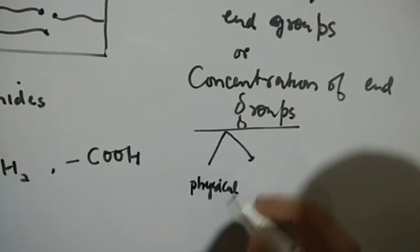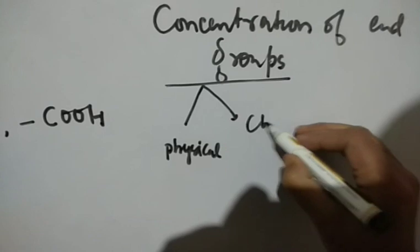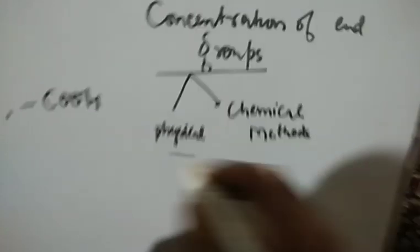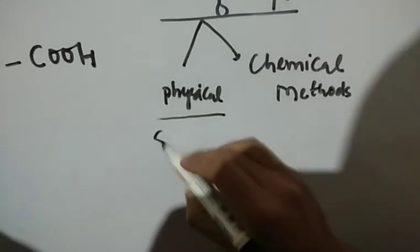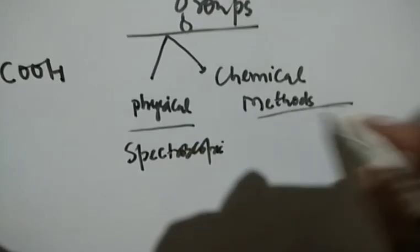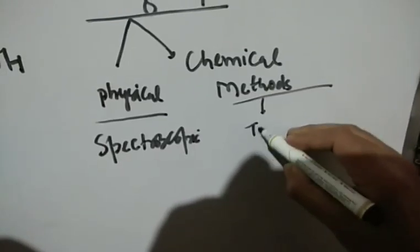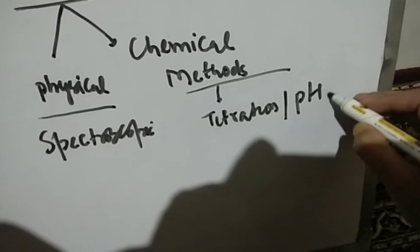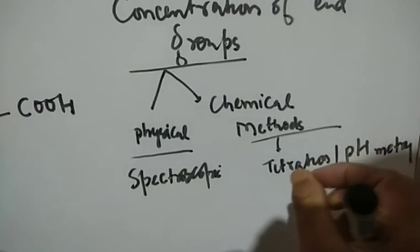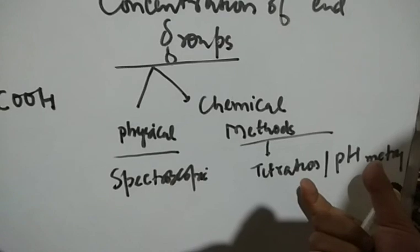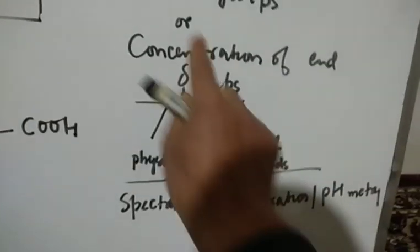Physical methods include spectroscopic methods. Chemical methods include titration and pH metric approaches. In this video we deal with the crux of end group analysis — using either a spectroscopic method, a titration, or a pH-based chemical method to determine the concentration of end groups.